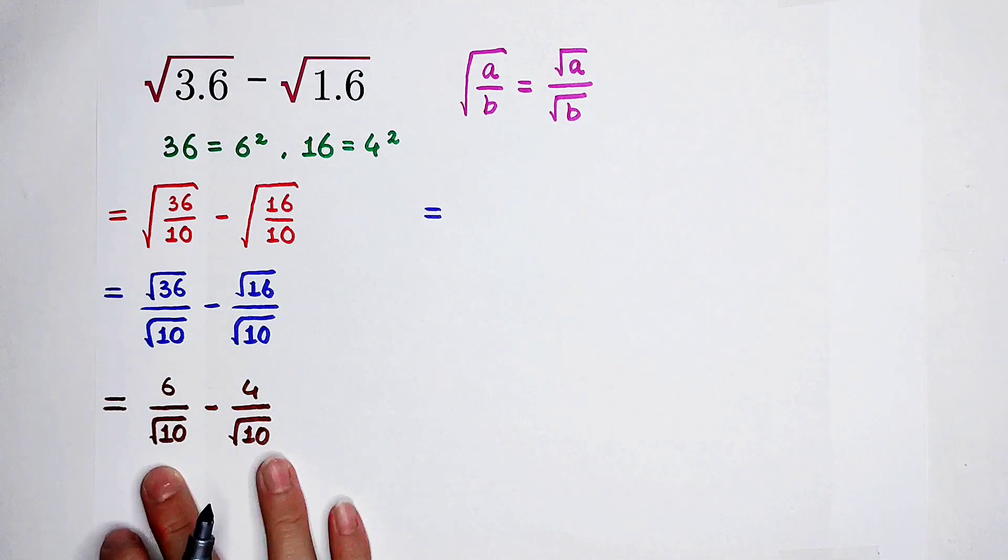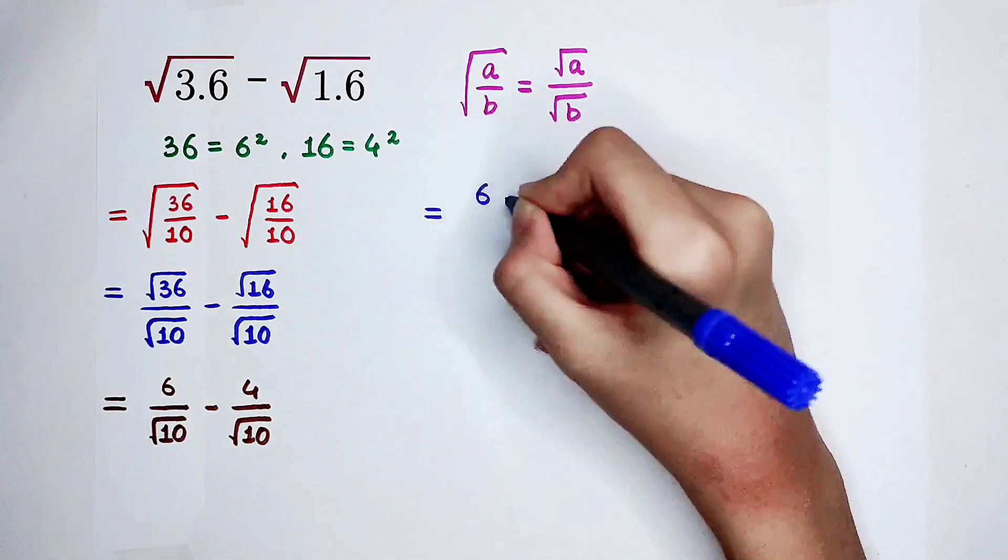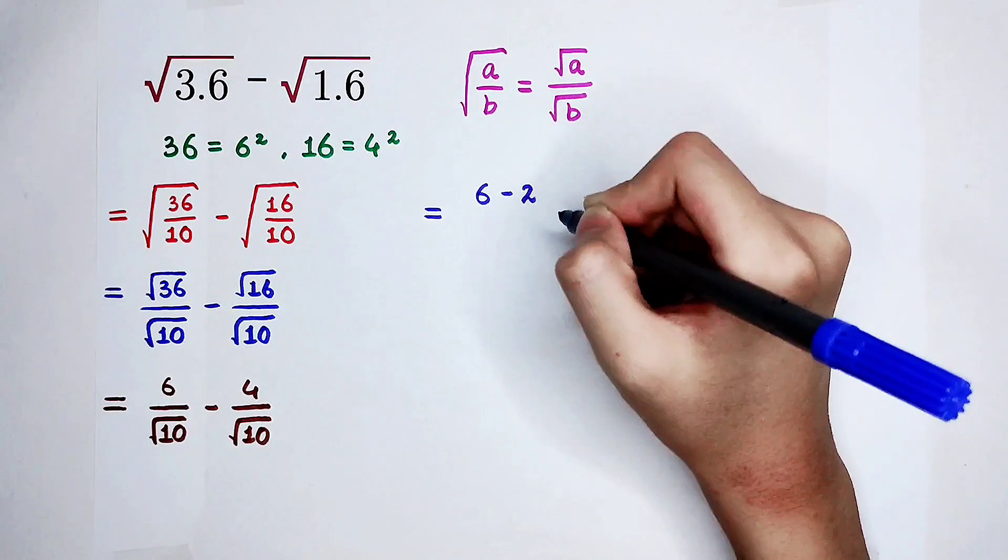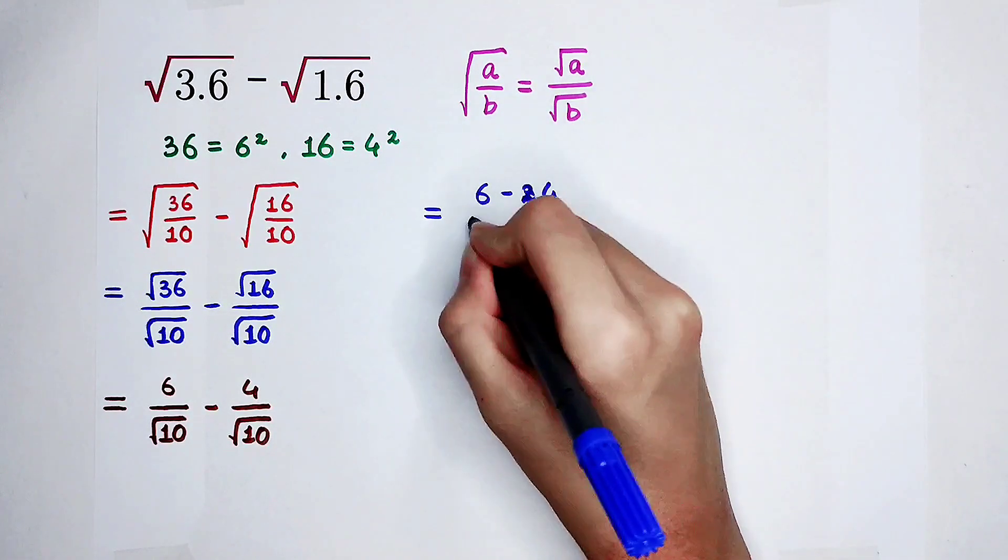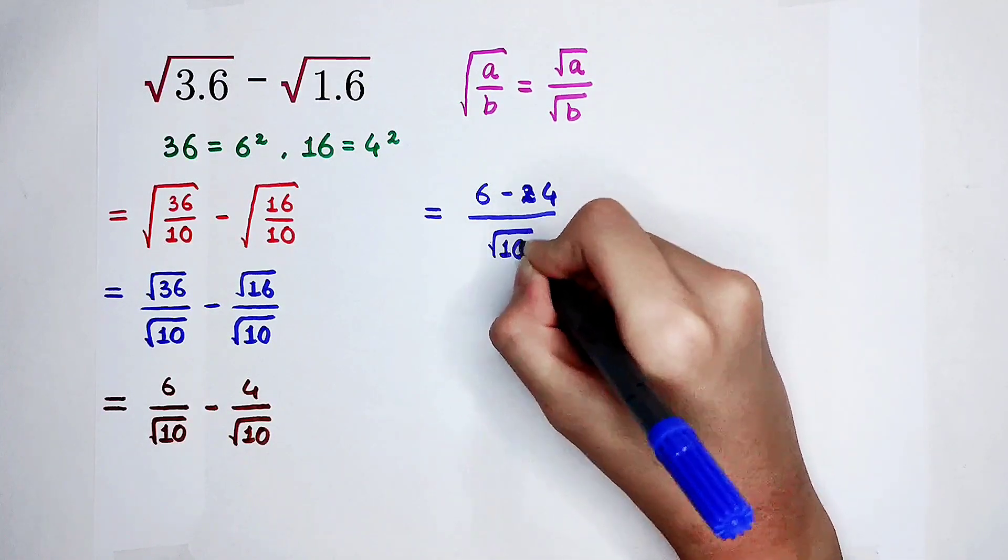Since these two fractions have the same denominators, square root of 10, the new numerator is 6 minus 4, and then all divided by square root of 10.